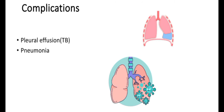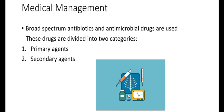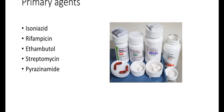Complications: there are two basic complications of pulmonary tuberculosis — pleural effusion and TB pneumonia. Medical management: broad-spectrum antibiotics and antimicrobial drugs are used, as Mycobacterium tuberculosis is resistant to several antibiotics and can survive in many extreme conditions. These drugs are divided into two categories: primary agents and secondary agents.